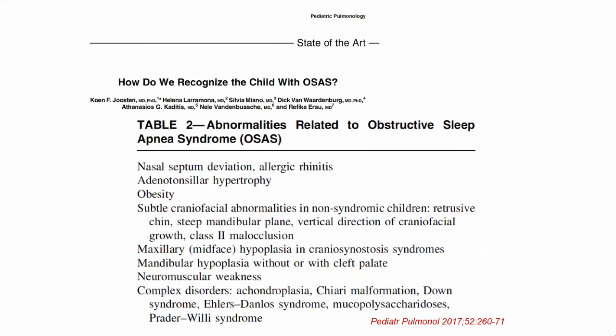We look at whether children have signs of OSA risk factors such as nasal septum deviation, adenotonsillar hypertrophy, obesity, maxillary or mandibular hypoplasia, and neuromuscular weakness. If you see a child with a complex disorder such as achondroplasia, Down syndrome, or Prader-Willi syndrome, we should always think about OSA because these children are at increased risk, have more severe disease, and also need more therapy to improve their quality of life.